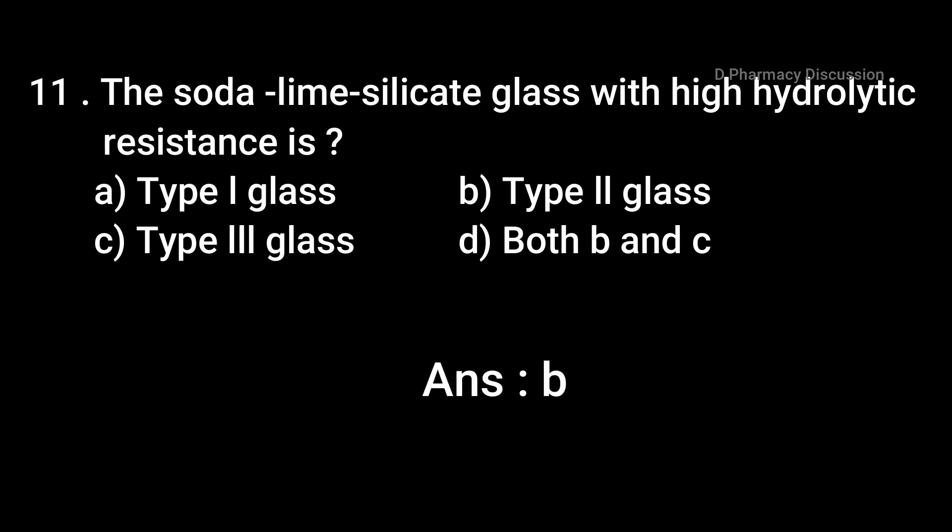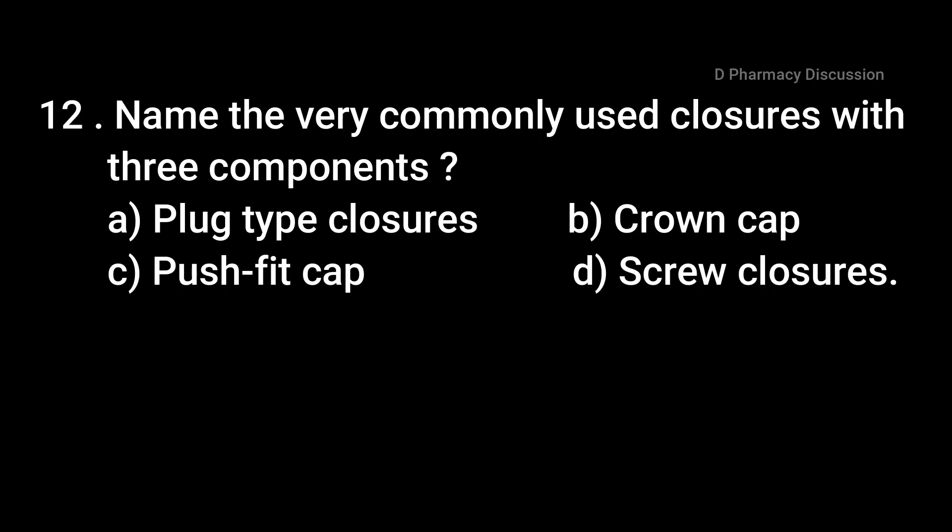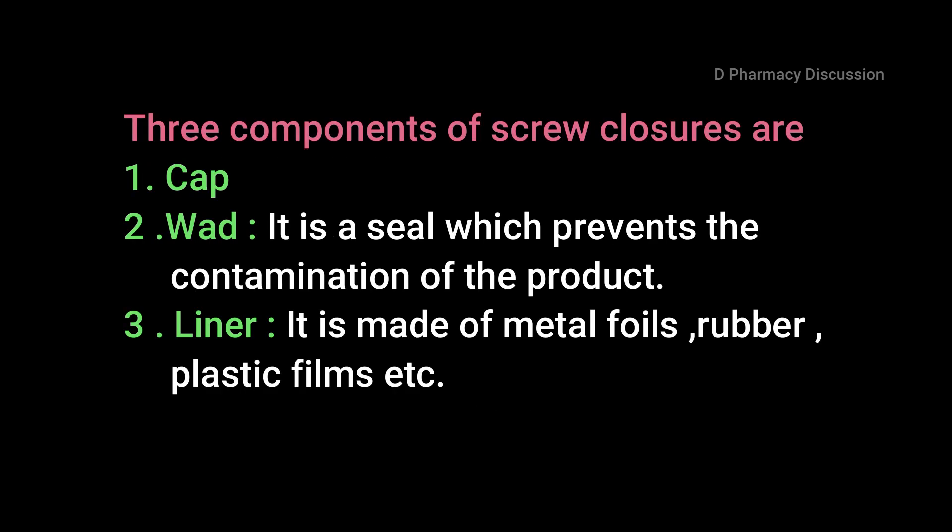Question 12: Name the very commonly used closure with three components. Option A: plug type closures, B: crown cap, C: push fit cap, and Option D: screw closures. Correct answer is Option D, screw closures. The three components of screw closures are cap, wad, and liner. The wad is a seal which prevents contamination of the product. The liner is made of metal foil, rubber, plastic film, etc.